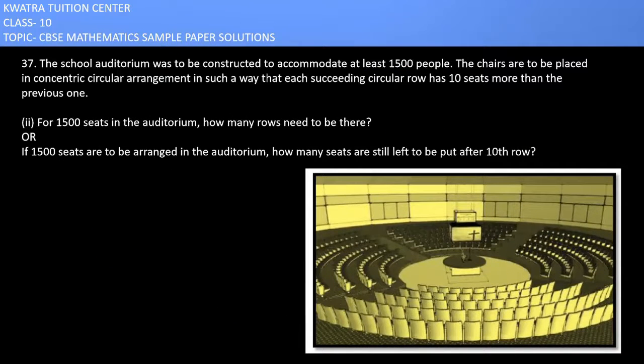Now moving to the next one, second part. It says that for 1500 seats in the auditorium, how many rows need to be there? We have to find n. The formula is S_n equals n by 2, 2a plus n minus 1d.